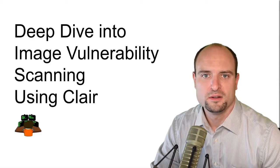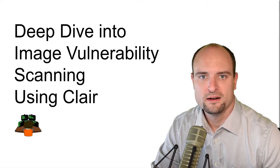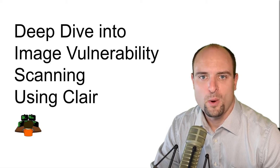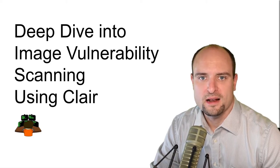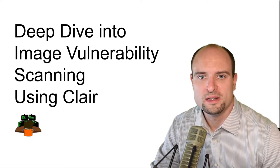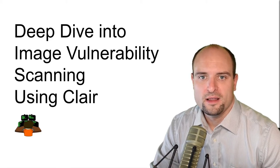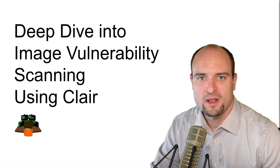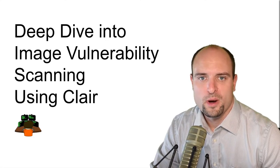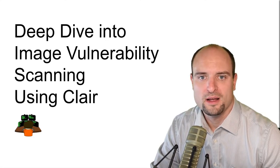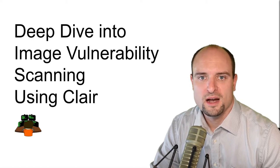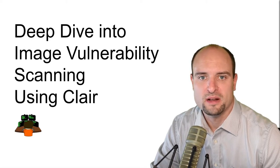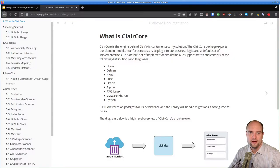Clair is a container image vulnerability scanner. It is used in Red Hat Quay and also in Red Hat Advanced Cluster Security for Kubernetes. Clair can also be used as a standalone scanner in your CI/CD pipeline. In this video we are going to take a look at how Clair works and what kind of scan results you can expect from it. The Clair project comes with very good documentation and I will include a link down below the video.